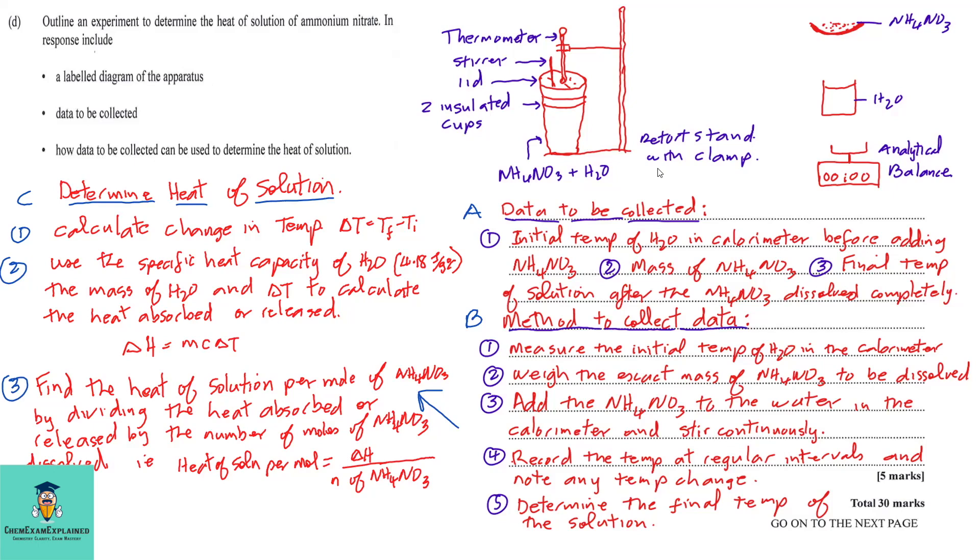So, here is our diagram which is our styrofoam cups which is representing our calorimeter. So, you could label this as the calorimeter. So, we have our calorimeter. We have the lid. It must be covered. We have two holes in the lid. One for the stirrer and the other for the thermometer. And of course, it is held by a retort stand. In the calorimeter, we would have the ammonium nitrate and water.